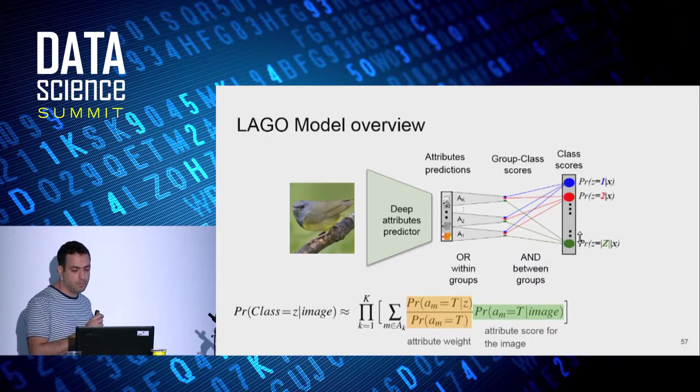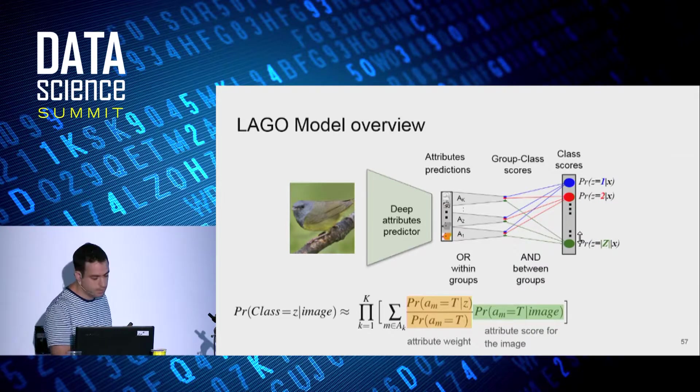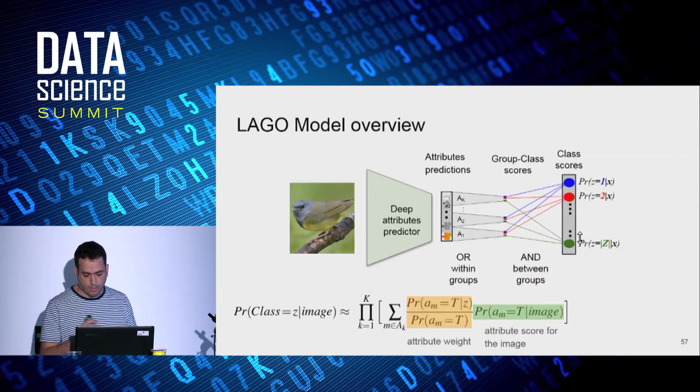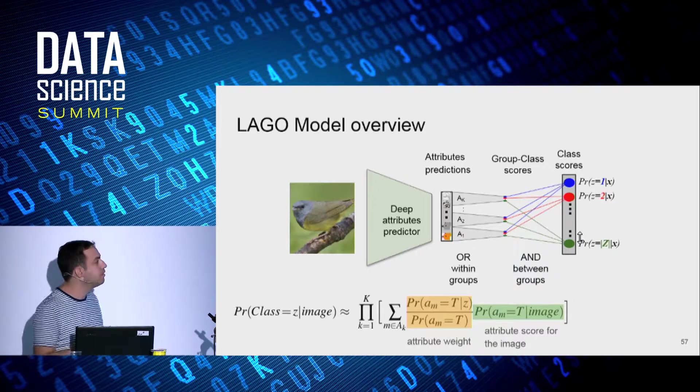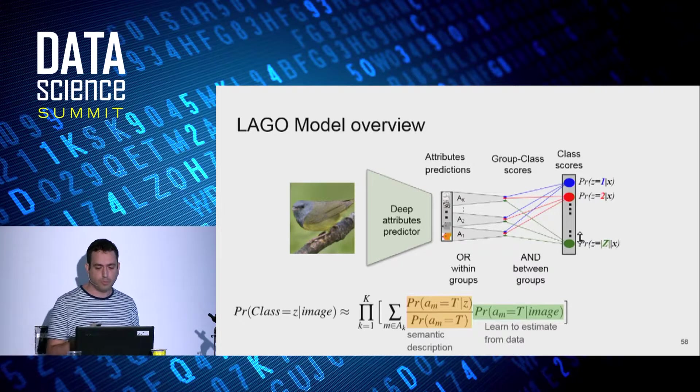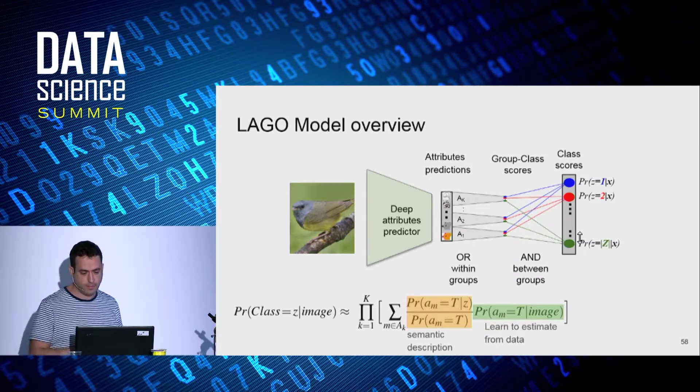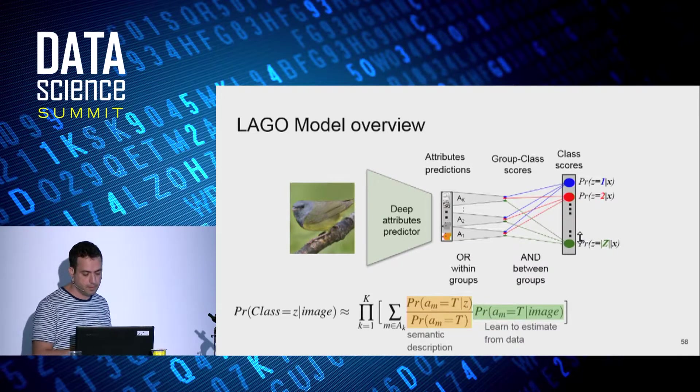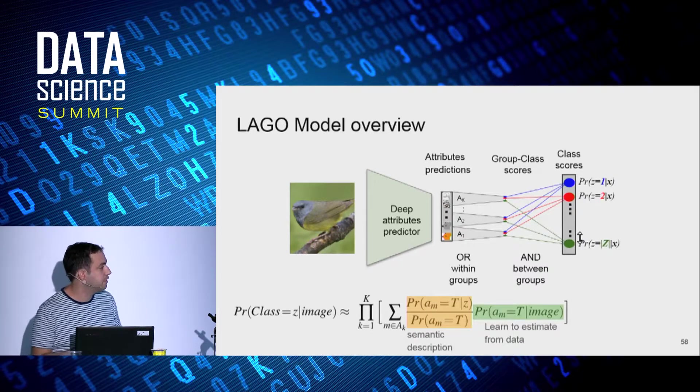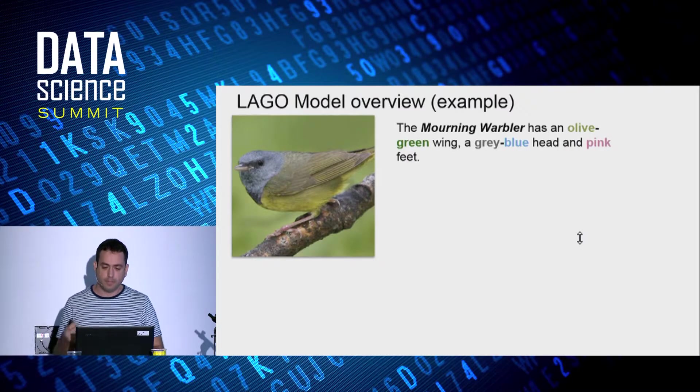In the equation that describes our model, we can see a weighted sum for attributes in each group A_k. Each attribute has a weight, the orange part, and a prediction score coming from the image. The weights are derived from the semantic description matrix we saw some slides ago, and we do it in a Bayesian manner. And we learn to estimate the attribute scores from the training data.